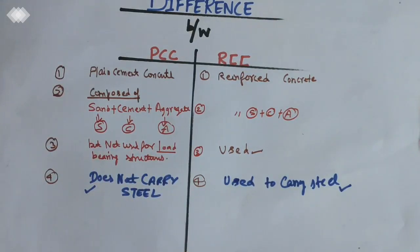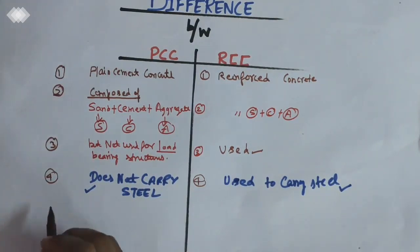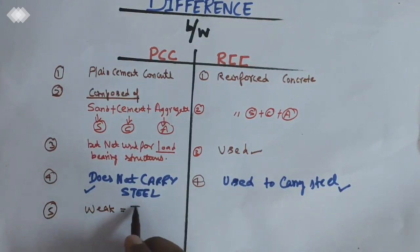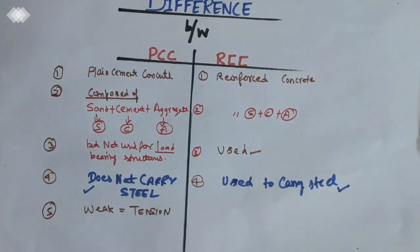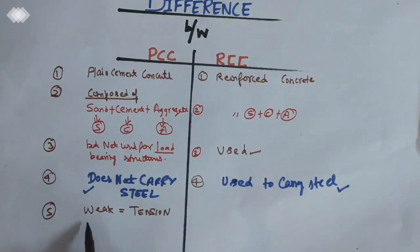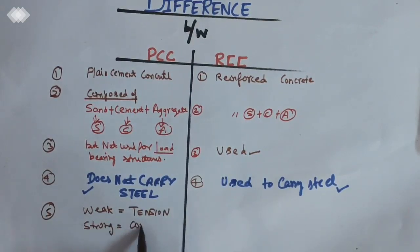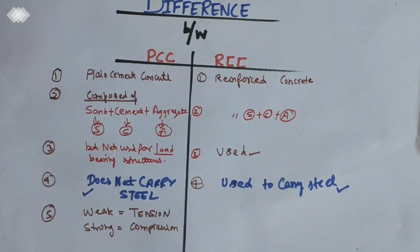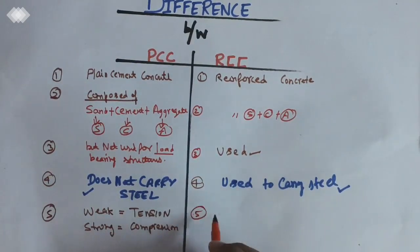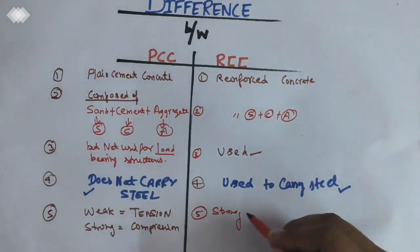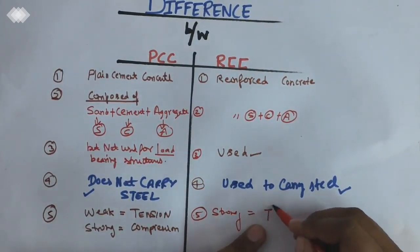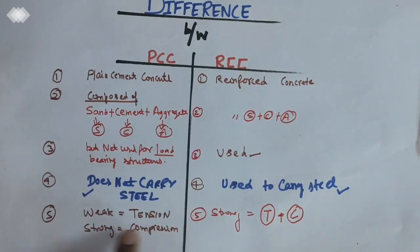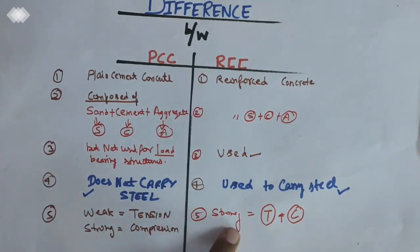This is the basic difference. Why we use RCC for load bearing structures and PCC not. The fifth point of difference: PCC is weak in tension and strong in compression loading. While RCC is strong in both tension and compression loadings.